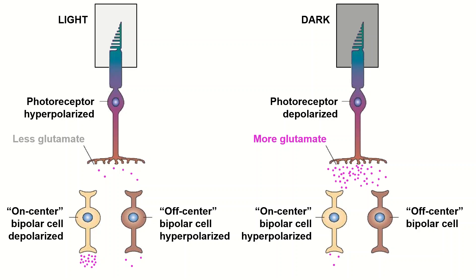In the light, the off center bipolar cell will receive less glutamate from the photoreceptors, therefore making it hyperpolarize and release less glutamate. In the dark, the bipolar cell will receive more glutamate from the photoreceptors, therefore making it depolarize and release more glutamate.